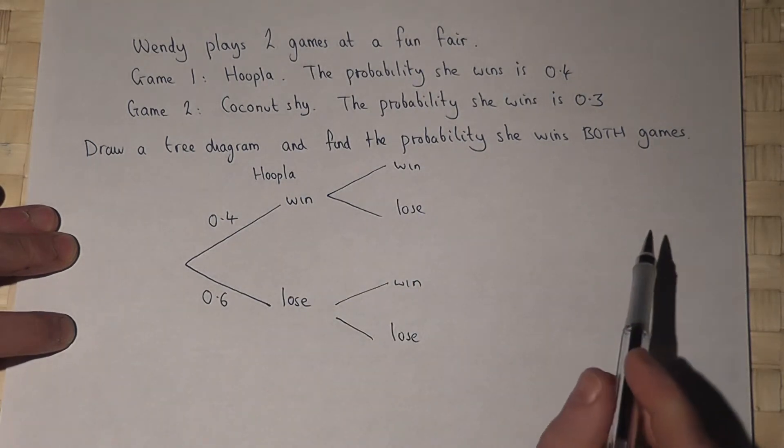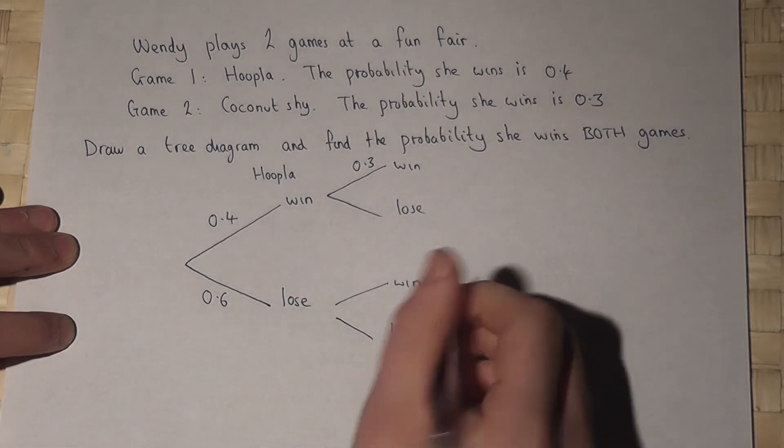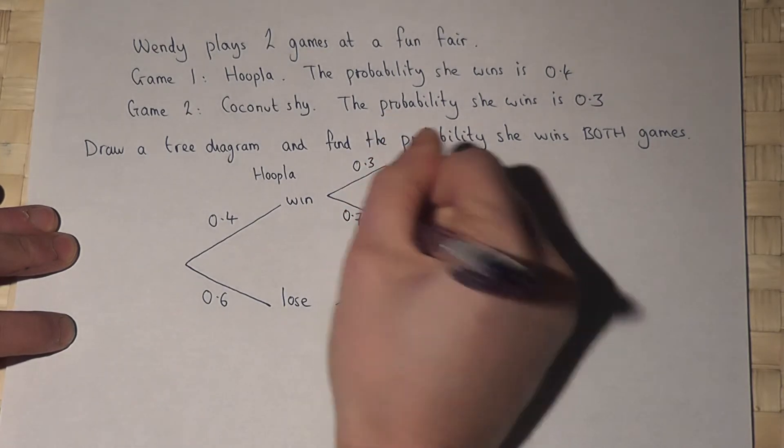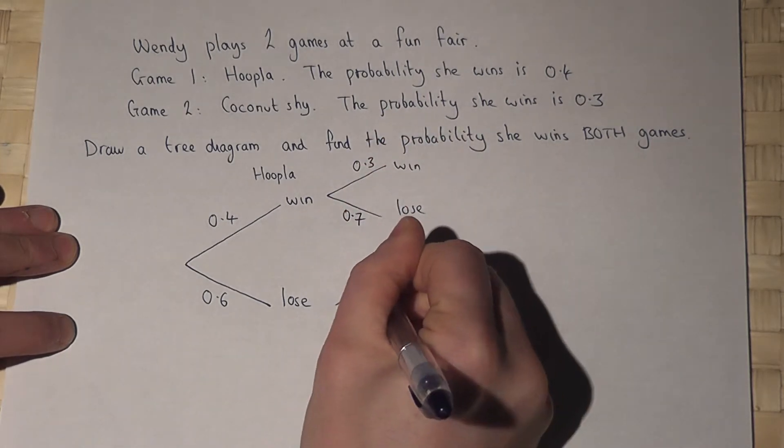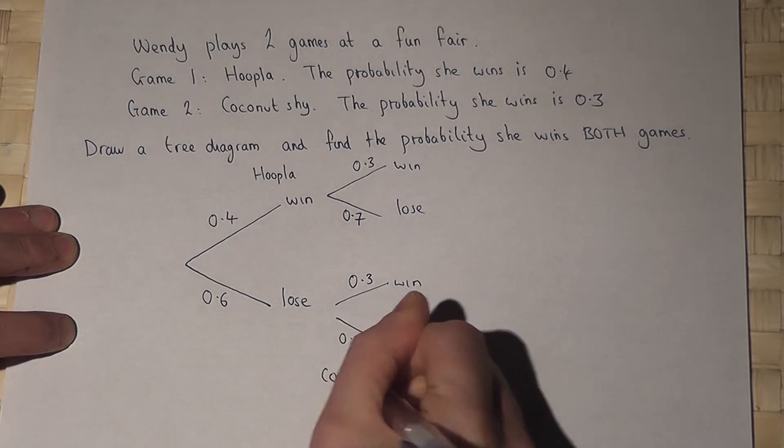However, the chance she wins the coconut shy is 0.3. So the chance she loses is 0.7. 0.3, 0.7. And this set of branches, as I said, is a coconut shy.